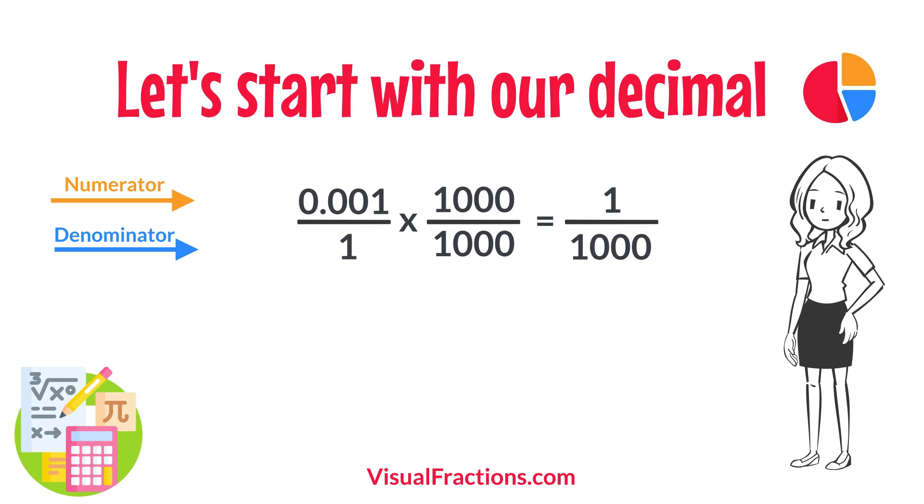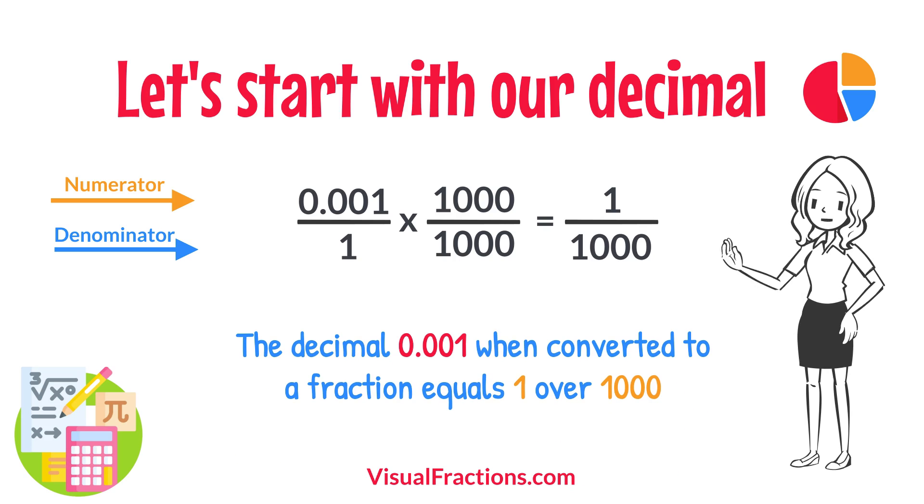And there you have it. The decimal 0.001 when converted to a fraction equals 1 over 1,000. This fraction is in its simplest form and cannot be further simplified.